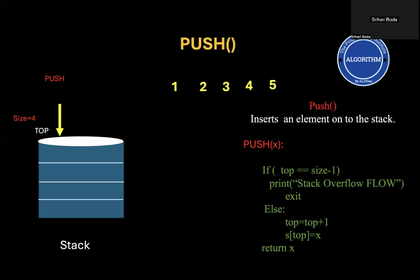Let us look into push operation now. Let us assume a stack with four slots. Each slot is associated with indexes, and the index numbers start from 0 to 3. Stack size is 4, so maximum slots we have is 4. Initially, we have a top reference which is pointing to invalid index minus 1.